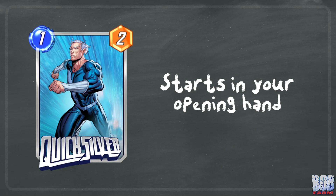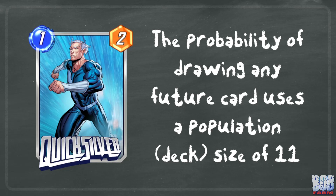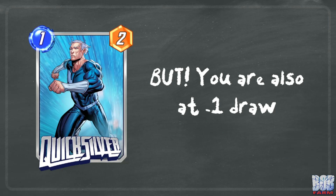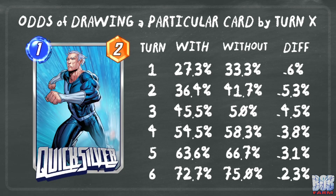Starting with Quicksilver, a card that everyone is familiar with as it is in the starter deck when you begin playing the game. Quicksilver is a 1 energy 2 power card that always starts in your opening hand, but what are the implications of this? The probability of drawing any future card uses a population or deck size of 11. You might think this could increase consistency of future draws like America Chavez, but you are also at negative 1 draw. Since you are guaranteed to draw Quicksilver, that is one draw that cannot be another card, so Quicksilver actually has the opposite effect — it reduces the odds of drawing any particular card from the deck.